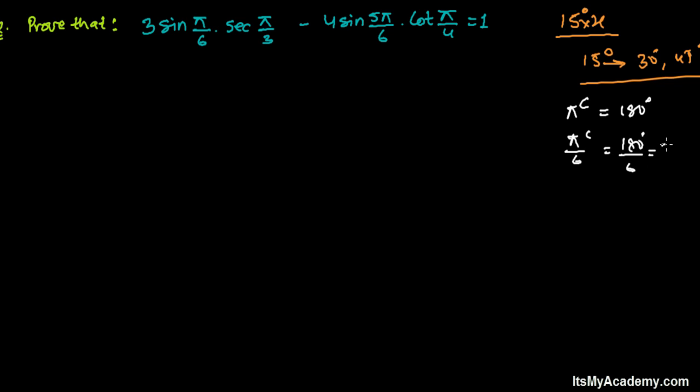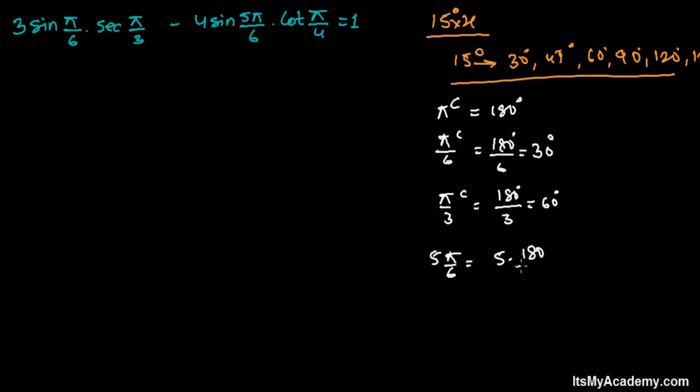So pi over 6 radians will equal 180 degrees by 6, that's going to be 30 degrees. Similarly, pi over 3 - it's 180 degrees divided by 3, that's 60 degrees. 5 pi over 6 - that's 5 times 180 degrees divided by 6, so it's 6 times 3, 5 times 3, that's 150.